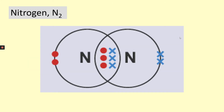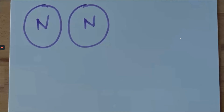Now let's look at nitrogen. You can see there are three pairs of electrons in the overlap. Because there are three pairs of electrons being shared, we say nitrogen has a triple bond — three covalent bonds. Going back to our definition: one covalent bond is a shared pair of electrons. Nitrogen is in group five, so one atom of nitrogen will have five electrons in its outer shell.